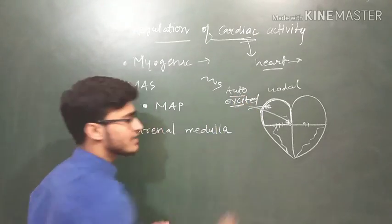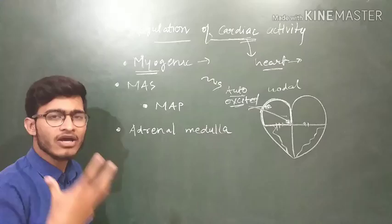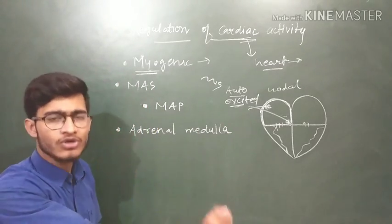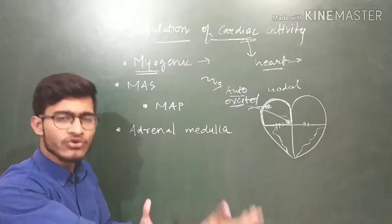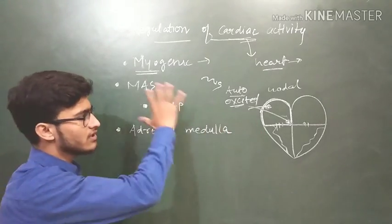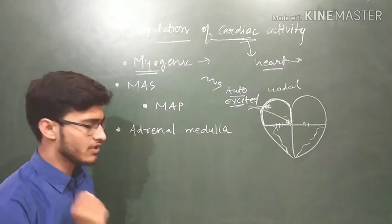This is the property of nodal tissue that they are auto-excited. They do not require any stimulus to get excited. And that auto-excitable property is very important to regulate the cardiac function. Since they are auto-excited, the heart is myogenic basically. Myo simply refers to muscle. Sometimes you have to give a stimulus, so there are neurogenic hearts also. Our heart is basically myogenic because auto-excitable nodal tissues are present here which can regulate the activity of heart.